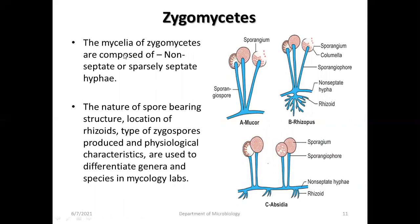Fungal species belonging to order Mucorales are ubiquitous in the environment, found in food, soil, and air, and frequently encountered in laboratories as contaminants. The relevance of isolates in clinical material may be difficult to establish. If aseptate hyphae are not seen in direct KOH examination or histopathological section, isolation of the organism from consecutive clinical specimens provides strong evidence of relevance. An important point: all fungi with aseptate hyphae are classified as Zygomycetes, but not all Zygomycetes have aseptate hyphae.